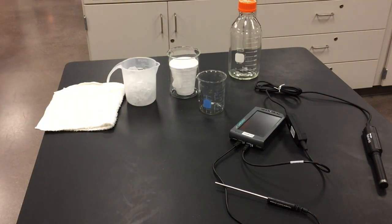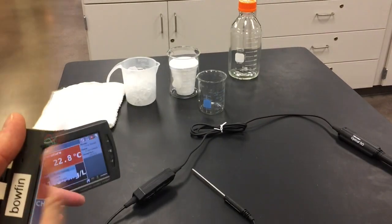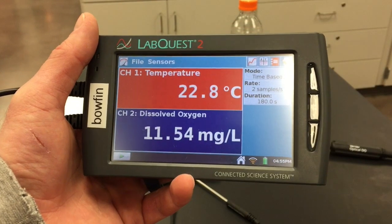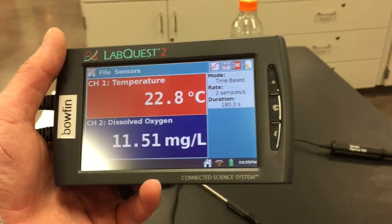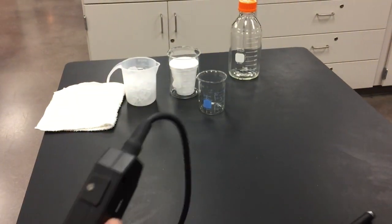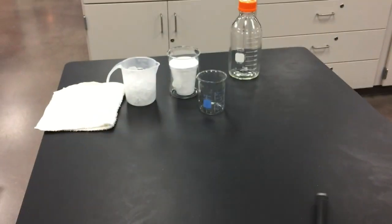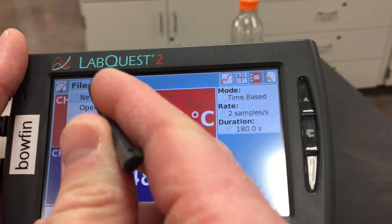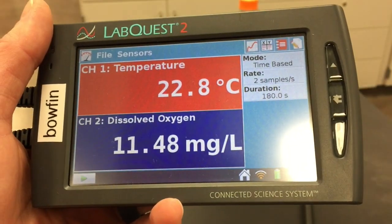Alright, so let's go through the setup of the LabQuest device first. On your LabQuest when you have the probes connected you should see something in degrees Celsius and milligrams per liter for the dissolved oxygen. If the dissolved oxygen isn't in milligrams per liter move the toggle switch so that it says milligrams per liter.